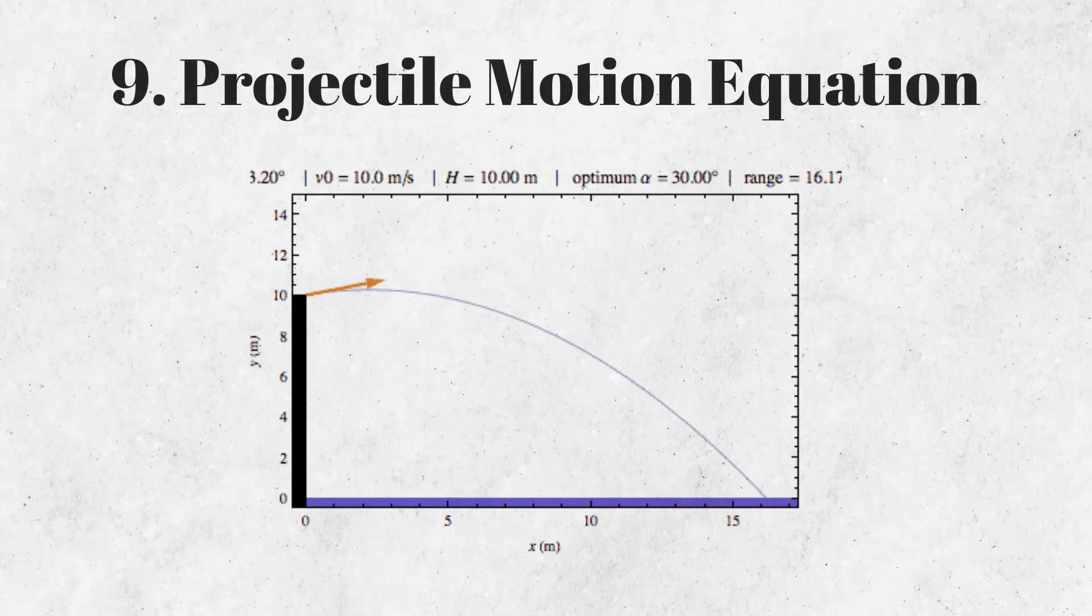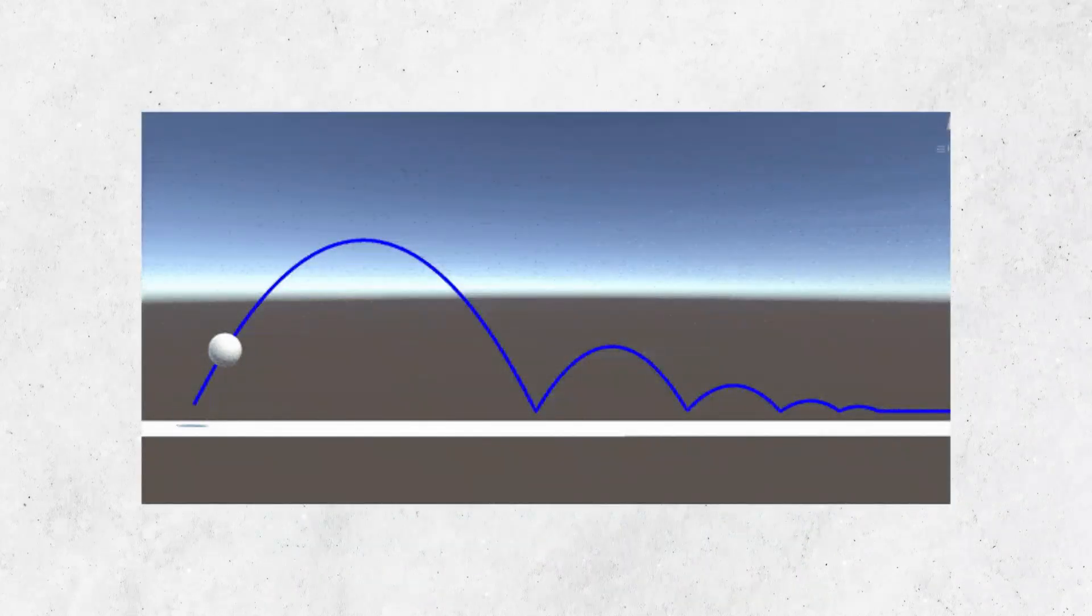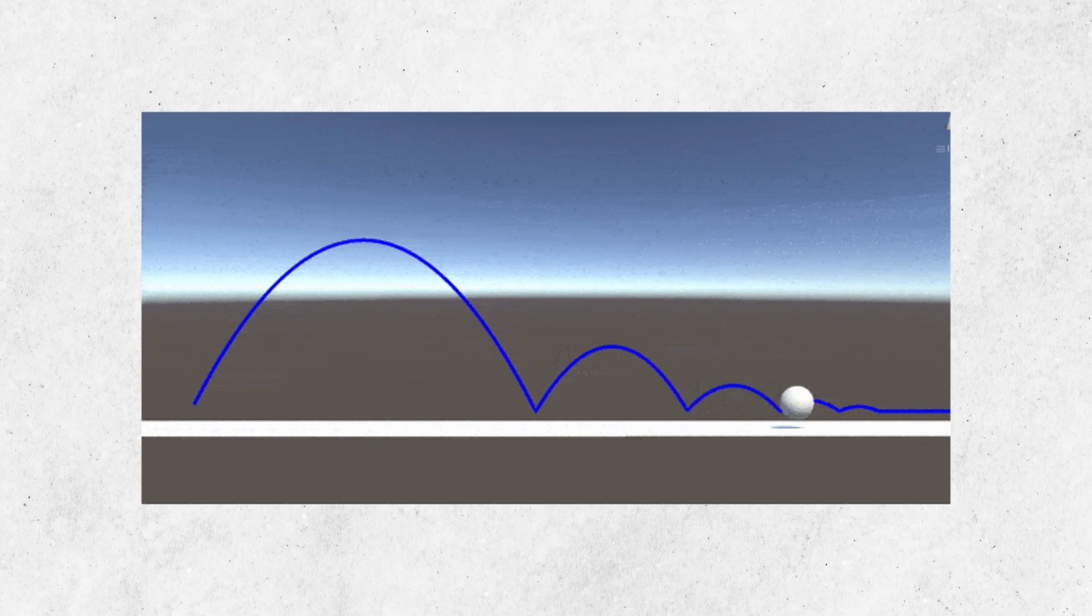The projectile motion equation describes the motion of an object under the influence of gravity. It takes into account factors such as initial velocity, angle of projection, and gravitational acceleration to determine the position and velocity of the object at any given time.